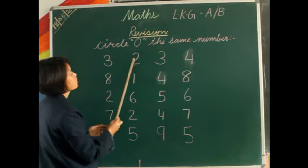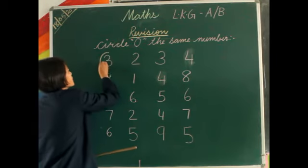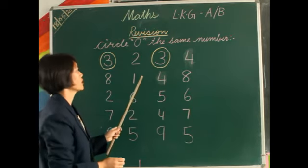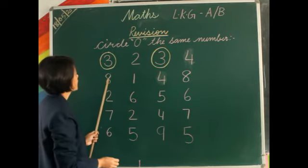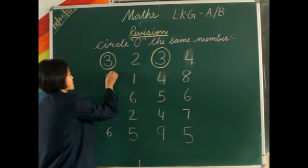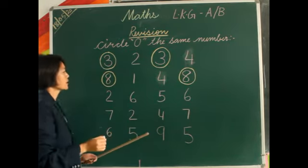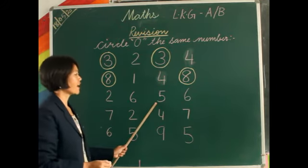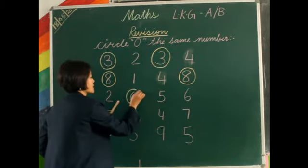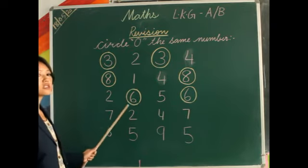So here we have 3, 2, 3, and 4. From these, which numbers are the same? Number 8 — so here we circle 8 and 8. Now here: 2, 6, 5, and 6. From here which numbers are the same? Number 6 — 6 and 6 are the same number, so we circle the same number.